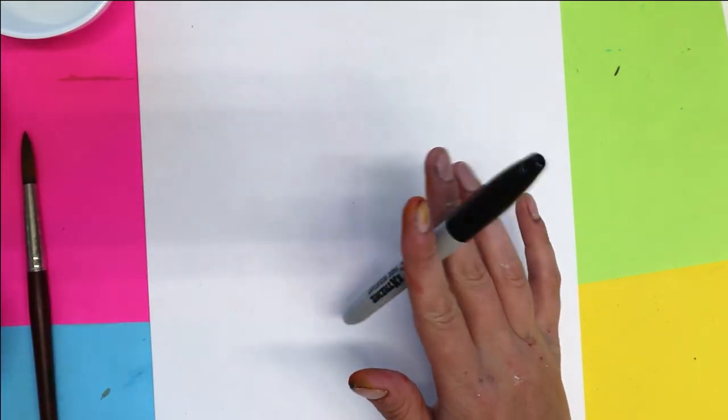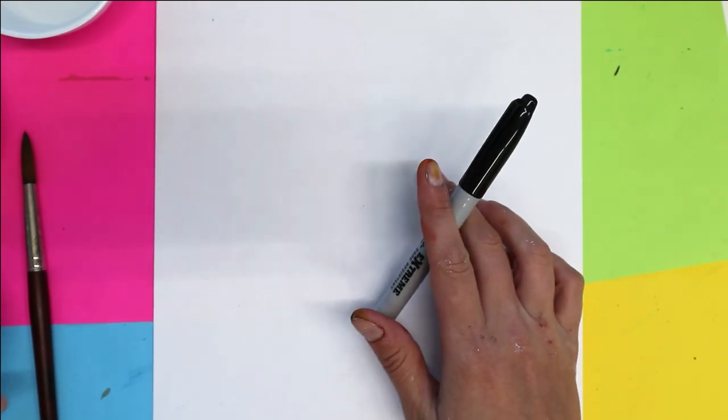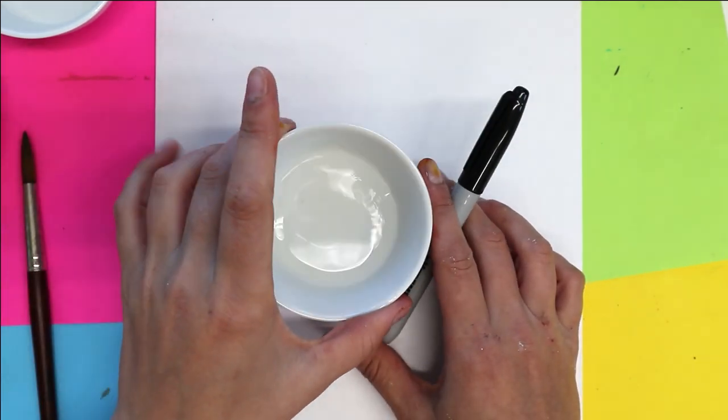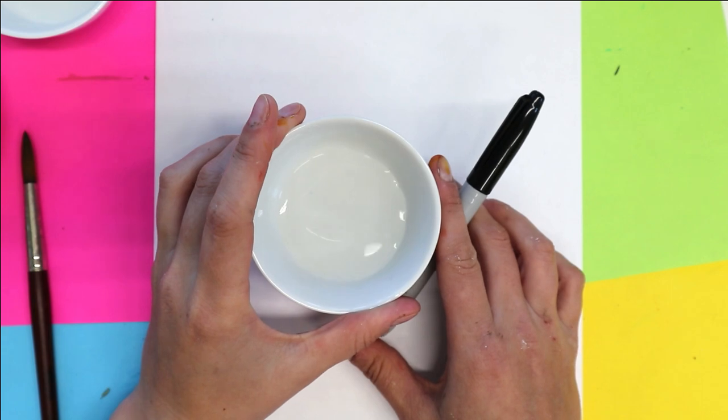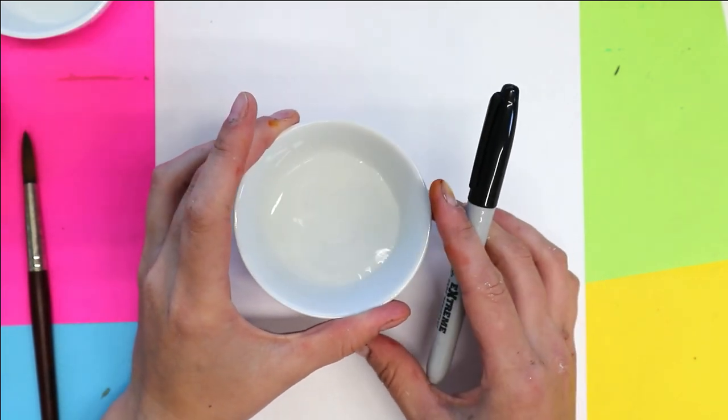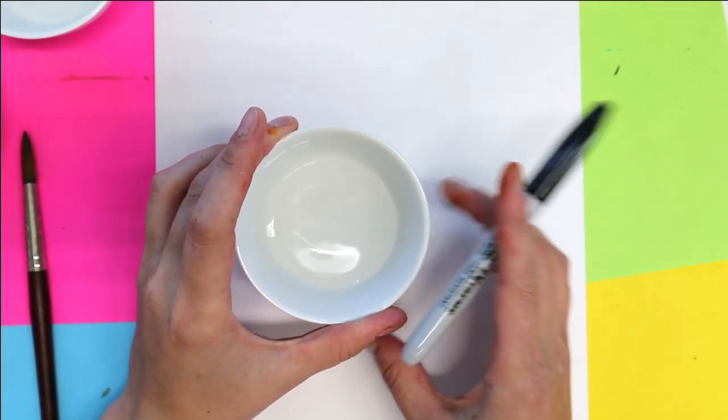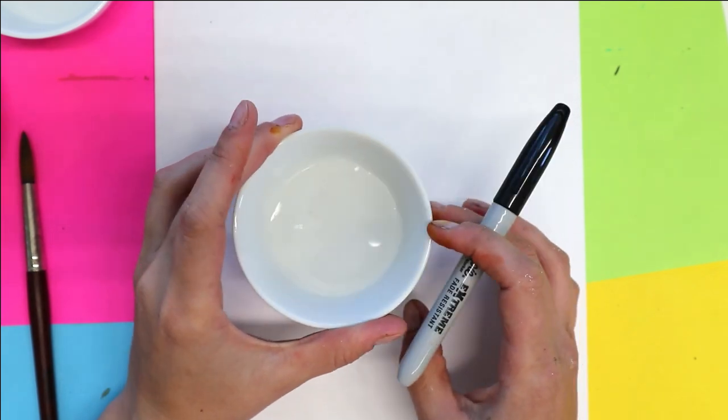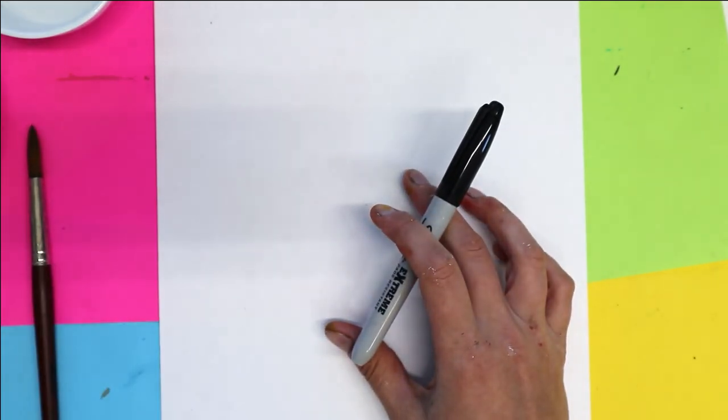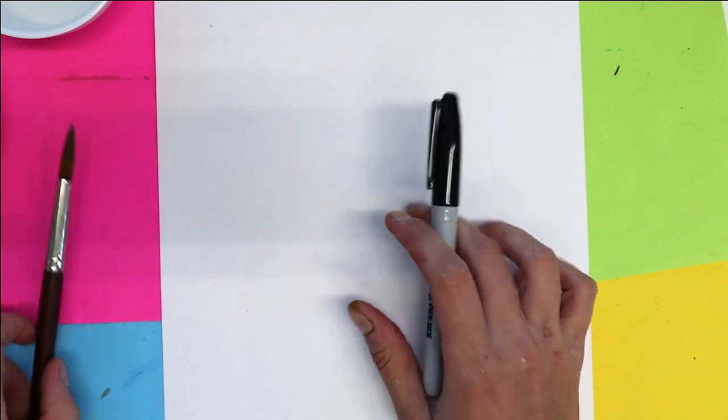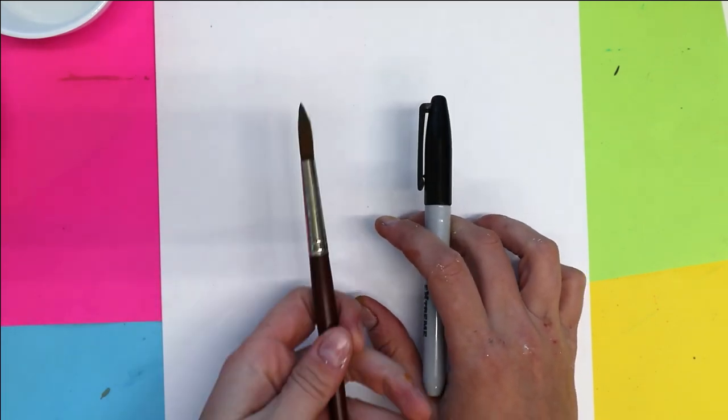Something to draw with because we're going to add a character on our piece and then just some containers that have water. You can just use a bowl or a glass and add just a little bit of water in the bottom. It's just food coloring so you can just easily wash this out later. You're also going to need some paper that's thick enough and a paintbrush.